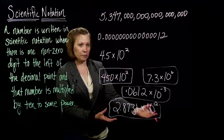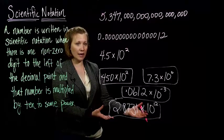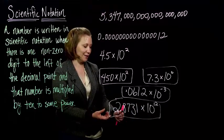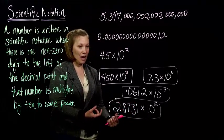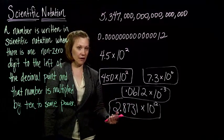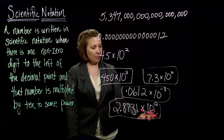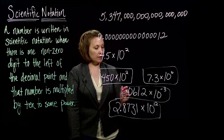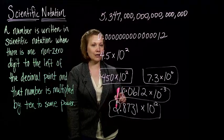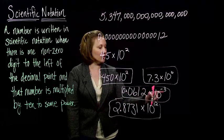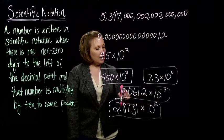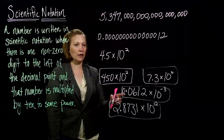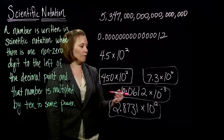If we look at the one on the bottom, this one is written in scientific notation — even though I've got lots of numbers after the decimal point. I still have one non-zero digit in front of the decimal point, and it's times 10 to some power. If we look at the one in the middle, there's a secret zero always in front of the decimal. So it's 0.0612 times 10 to the negative 3. This one is not in scientific notation, because we don't have a non-zero digit to the left of the decimal.